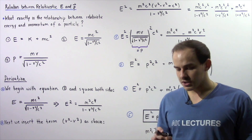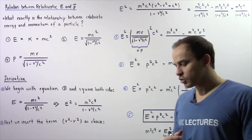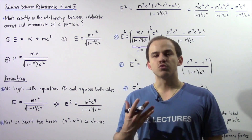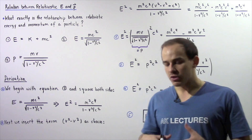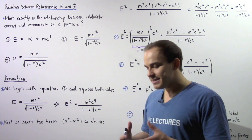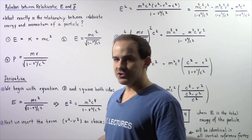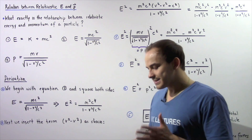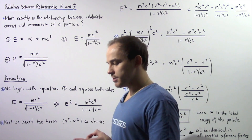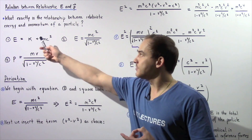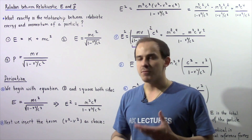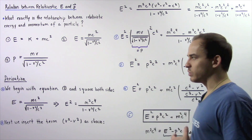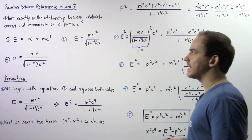Up to this point, we discussed two important relativistic quantities: relativistic energy and relativistic momentum. These quantities change when we change inertial reference frame. Now the question remains: can we build a relationship between relativistic energy and relativistic momentum of our particle? That's exactly what we're going to attempt to do in this lecture.